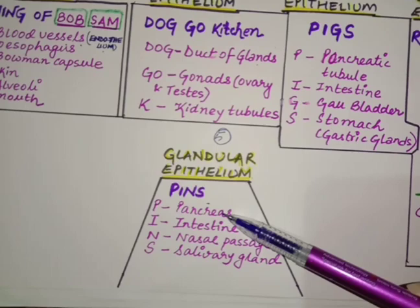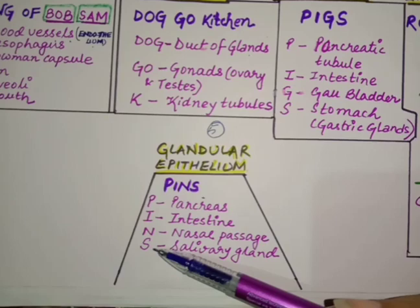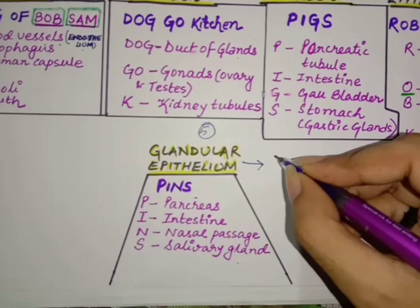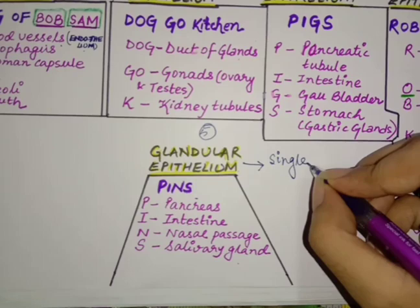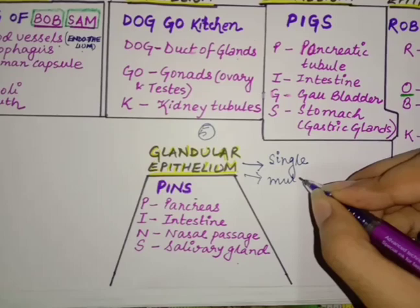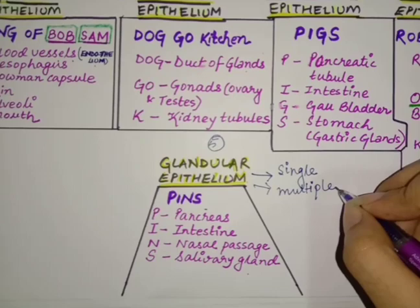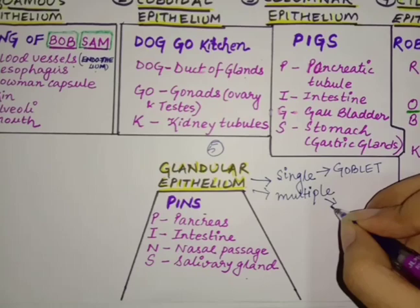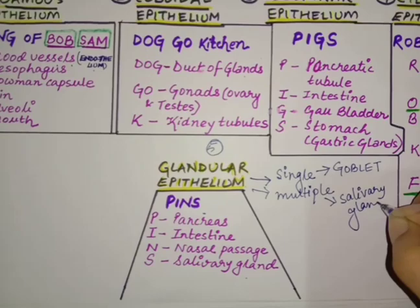For glandular epithelium, remember 'PINS.' P stands for pancreas, I for intestine, N for nasal passages, and S for salivary gland. Glandular epithelium can be a single cell secreting some secretion — a simple example is the goblet cell which secretes mucus — or it can be multiple cells secreting any kind of secretion, like the salivary glands.